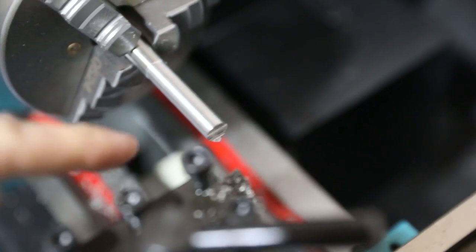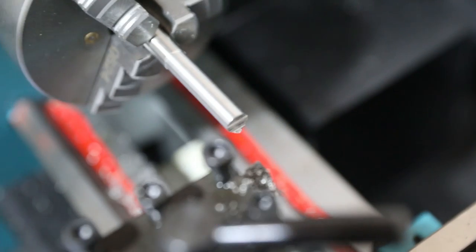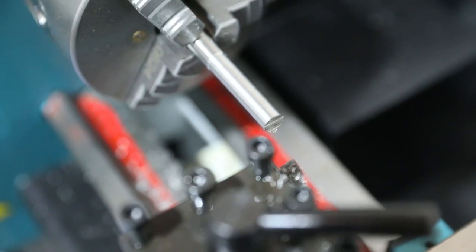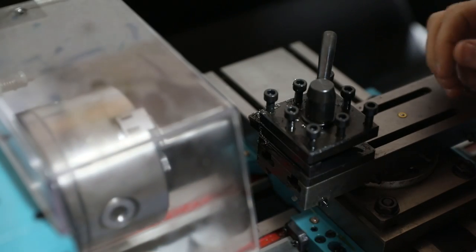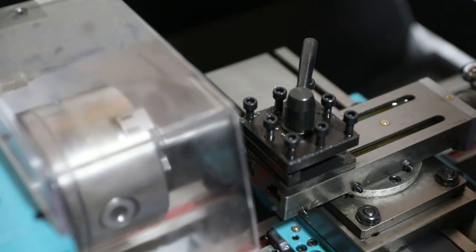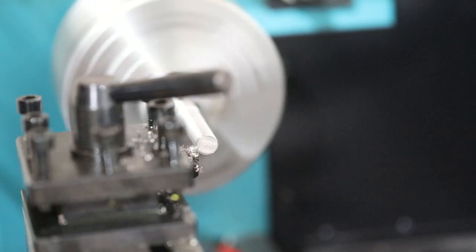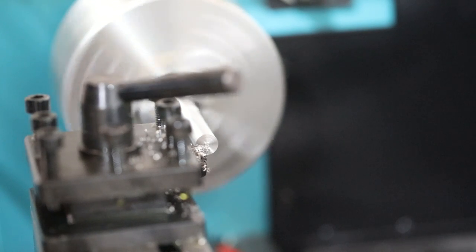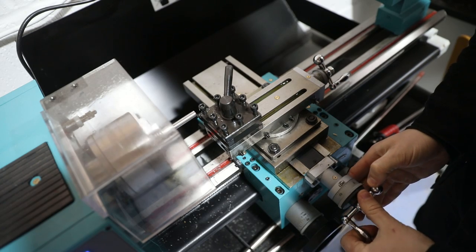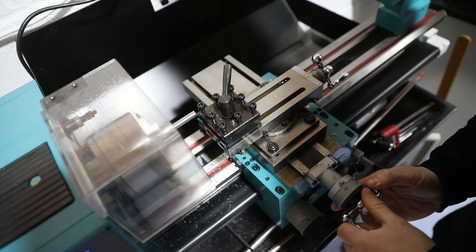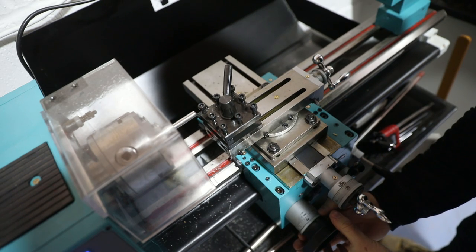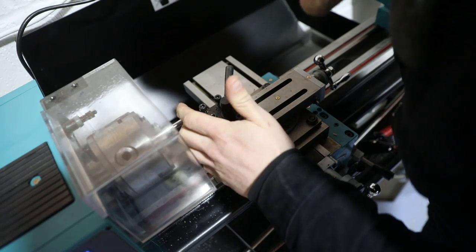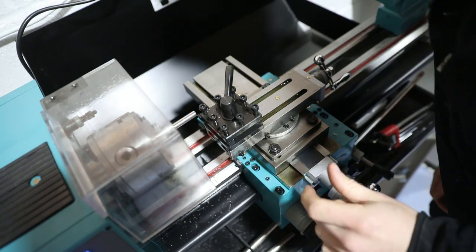So I now need to face off the end of this to get it nice and smooth and get rid of that tab of metal on the bottom there. So I'm going to use the same cutter for this. I'm pretty sure you can do that. And now we'll start auto feeding the forwards and backwards travel on this. Okay, and then zero that.